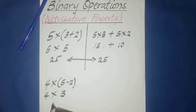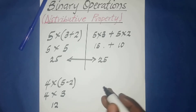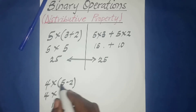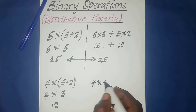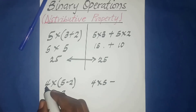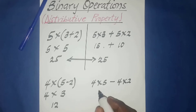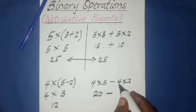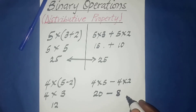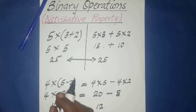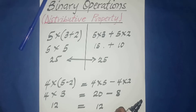We can also use the distributive property by distributing the four to the two quantities in the bracket: four times five minus four times two. That gives us twenty minus eight, which equals twelve — equivalent to what we got before. So both methods give the same answer.